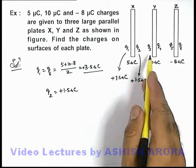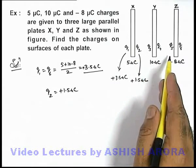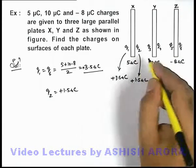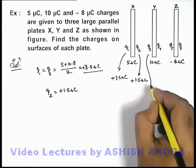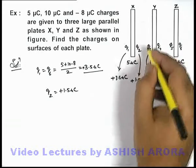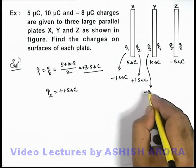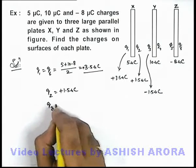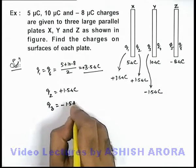And as we know that in case of a system of parallel plates, facing surfaces of the plates will always carry equal and opposite charges. That means the charge on the left face of the plate Y, that is q3, can be written as minus 1.5 micro coulomb.